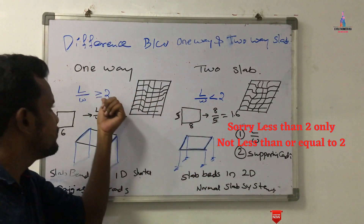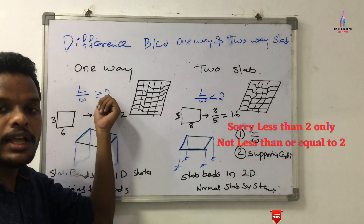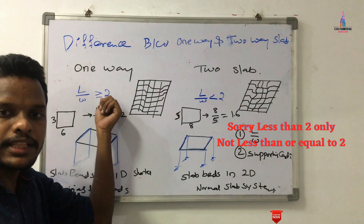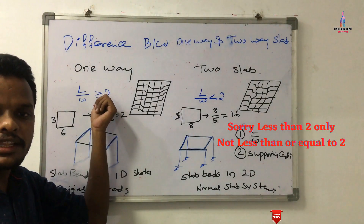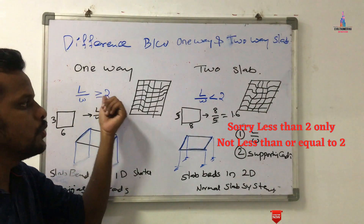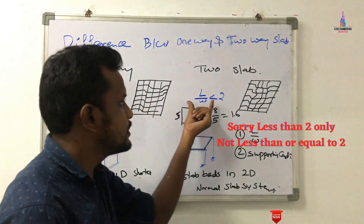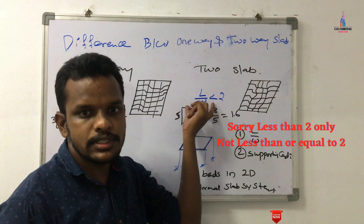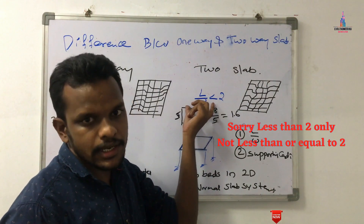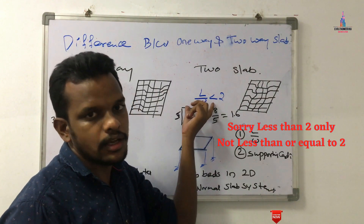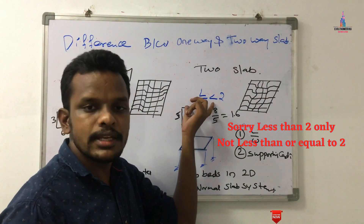For the one-way slab system, the value of length by width will be greater than or equal to 2. For the two-way slab system, it is less than 2.